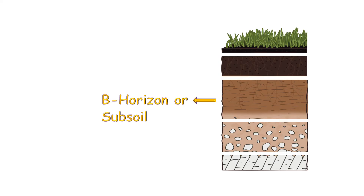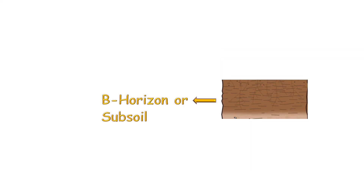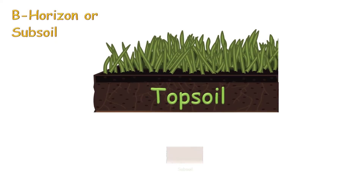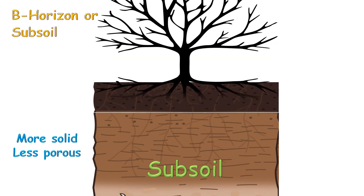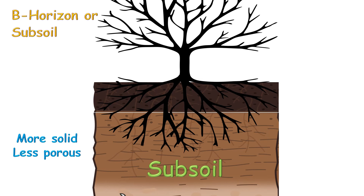B horizon, or subsoil, is present below the topsoil. This layer is more solid and less porous. It is deeper, so only the roots of big plants reach this layer. This layer does not have humus, but it is rich in mineral salts that the roots of big plants absorb from here.